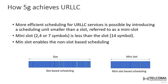Now we need to understand how 5G is able to achieve ultra-reliable low-latency communication. One reason is that 5G uses more efficient scheduling for URLLC services. This is possible by introducing a scheduling unit smaller than the slot originally used in 4G. In 5G, we now use the concept of the mini-slot.